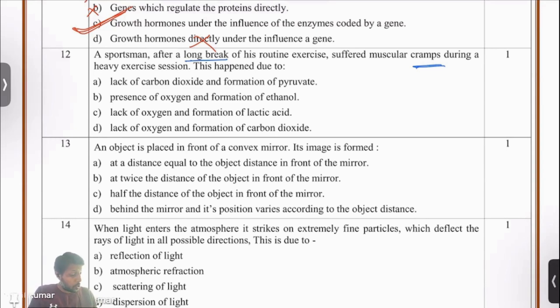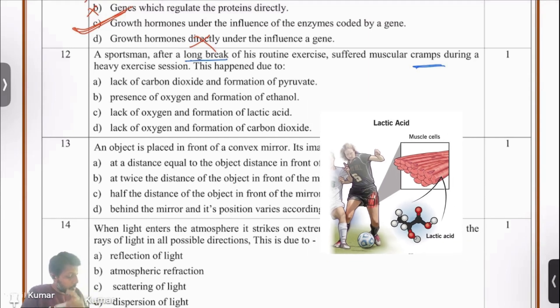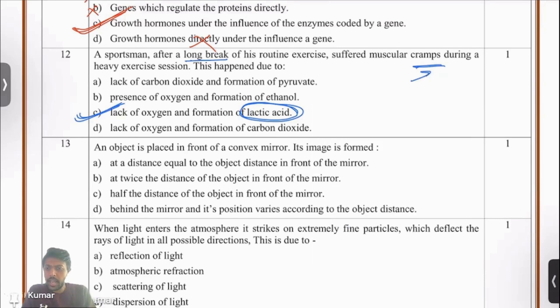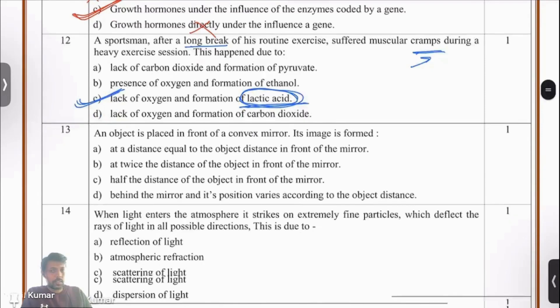Let's identify the reason. Lack of carbon dioxide and formation of pyruvate, no. Presence of oxygen and formation of ethanol, no. Lack of oxygen and formation of lactic acid, yes. It's the lactic acid that gives you those cramps. When we exercise, our muscles are respiring anaerobically, breathing in the absence of oxygen. That process produces lactic acid, and this lactic acid is responsible for the cramps we get during heavy exercises.